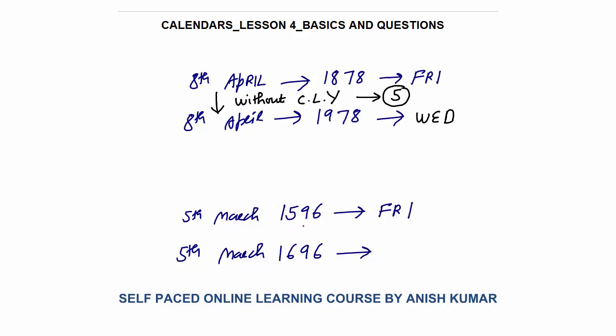Second case: 5th of March 1596 is Friday — 5th of March 1696, again a 100-year gap, but with a century leap year because year 1600 is a century leap year. So there will always be 6 odd days. Friday plus 6: Friday plus 2 is Sunday, Sunday plus 4 is Thursday.